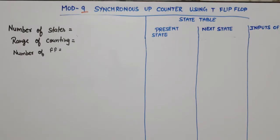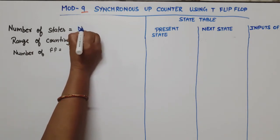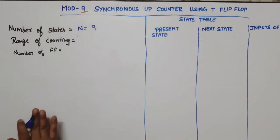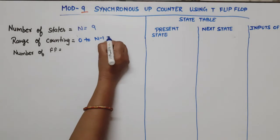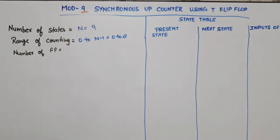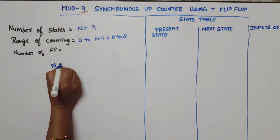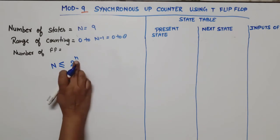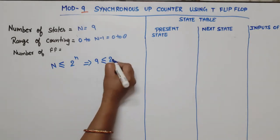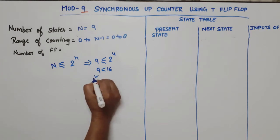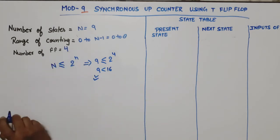In this video on digital electronics, I am going to design a Mod-9 synchronous up counter using T flip-flops. This is a Mod-9 counter, so it counts 9 states. The counting range for an up counter is 0 to N-1, which means 0 to 8. For the number of flip-flops required, N must be less than or equal to 2 raised to power n. Since 9 is less than 16 (2^4), the condition is satisfied, so we need 4 flip-flops.